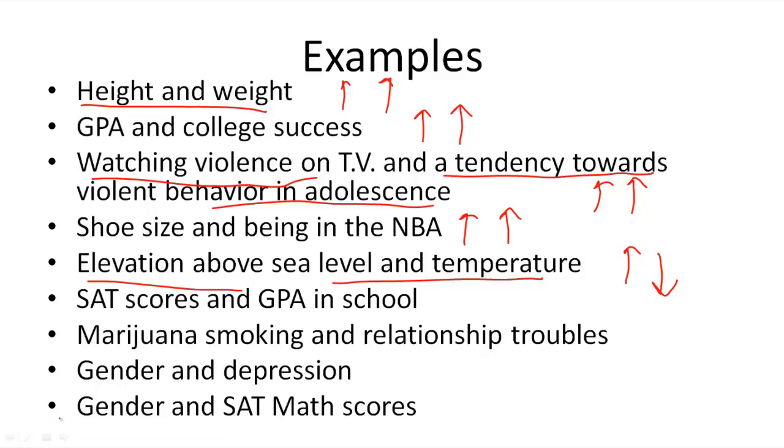SAT scores in school connected to GPA. There tends to be a strong relationship there. Marijuana smoking and relationship troubles. So the more a person smokes marijuana, the more relationship troubles they're going to have. Or another way of, depending on how they phrase it, the more a person smokes marijuana, the less likely they'll be in relationships that are successful.